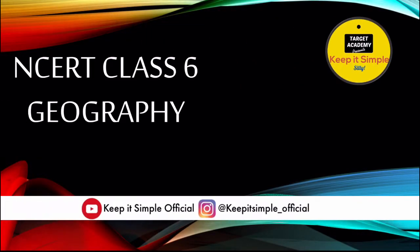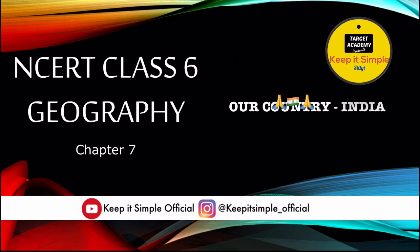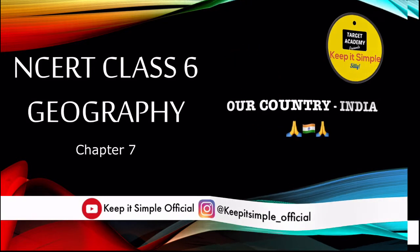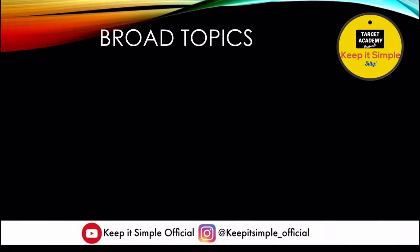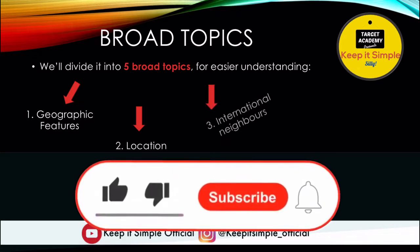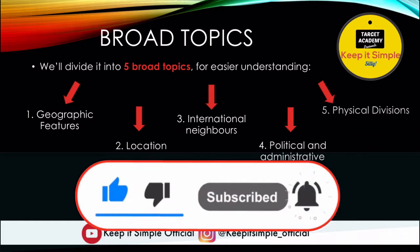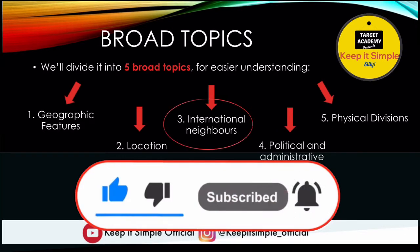Hello guys, today we are going to Class 6 Geography Chapter 7, Part 2 — Our Country India. As you remember, we divided this chapter into 5 broad blocks. In the last part we completed the location, covering important concepts such as latitudes, longitudes, geographical features, and local timing. Today we are going to start with International Neighbors, and as usual we will complete this in a simple format. So let's start.